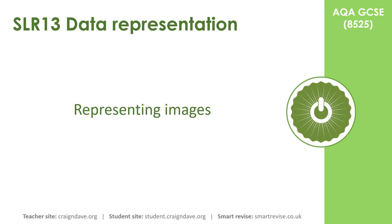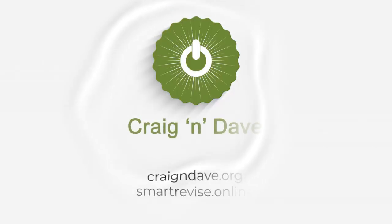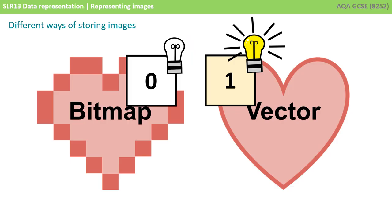In this video, we explore how images are represented in a computer system. As we know, everything in a computer system must be stored in binary, and this includes images. There are two ways of storing images in binary. One is called a bitmap, and the other is called a vector.